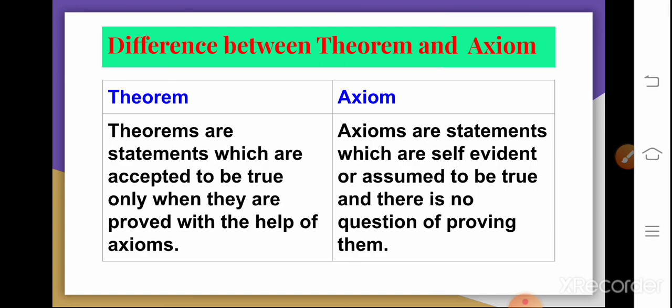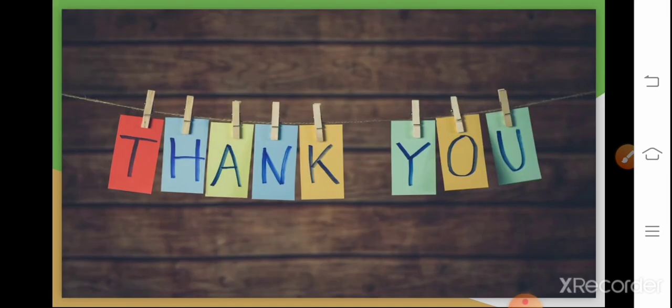Now let us see the difference between theorem and axioms. Theorems are statements which are accepted to be true only when they are proved with the help of axioms. The axioms are statements which are self-evident or assumed to be true, and there is no question of proving them. Thank you.